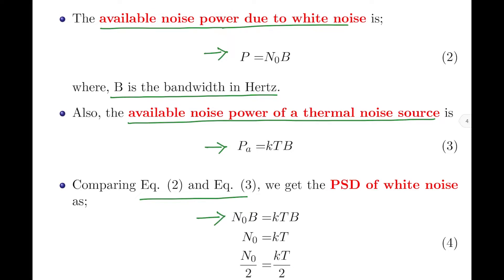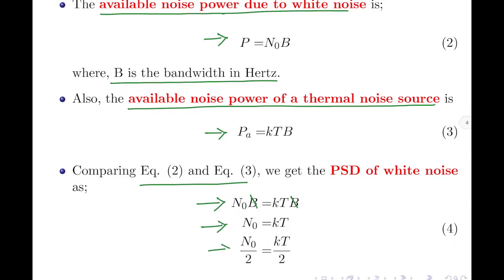Writing the right-hand sides of equations 2 and 3 respectively, we get N₀B = KTB. Eliminating B from both sides gives N₀ = KT. Dividing both sides by 2, we get N₀/2 = KT/2. That is, the power spectral density of white noise, previously derived as N₀/2, is also equal to KT/2, where K is the Boltzmann constant and T is the temperature in degrees Kelvin.